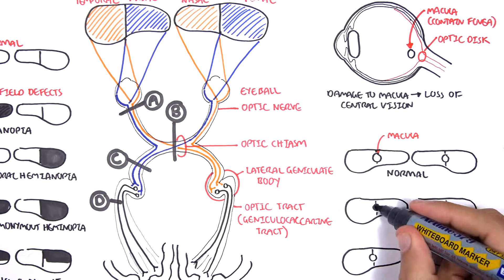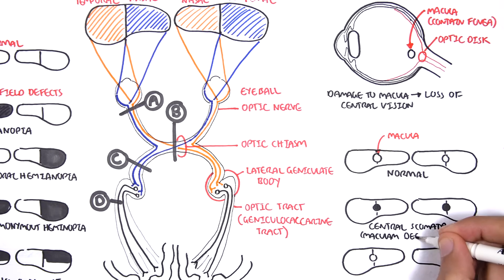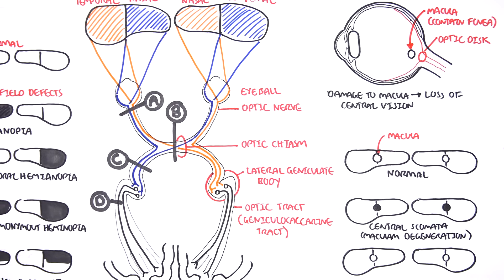In a condition known as central scotoma or macular degeneration, you get loss of this central visual vision because of the damaged macula.